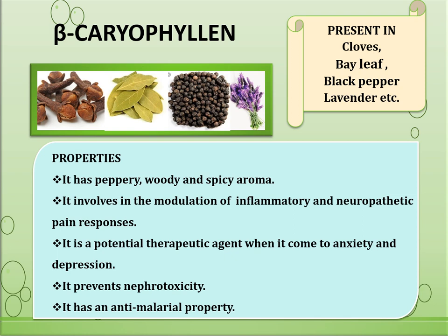The next terpene is beta-caryophyllin. It is a sesquiterpene found in many plants such as cloves, bay leaves and black pepper, and in minor quantities in lavender. It has a peppery, woody and spicy aroma. Caryophyllin is the only terpene known to interact with the endocannabinoid system. Some studies show that CB2 receptors are critically involved in the modulation of inflammatory and neuropathic pain responses. Orally administered beta-caryophyllin reduces inflammatory pain responses and also reduces spinal neuroinflammation.